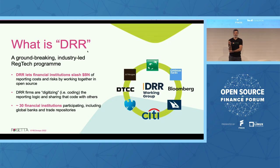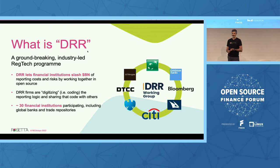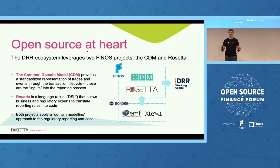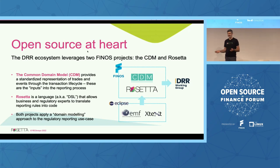In reality, there are more than 30 financial institutions that have been participating in the program, including a number of global banks as well as trade repositories, which are on the receiving end of those reports. All of this has been open source at heart and from the get-go. The DRR ecosystem leverages two Finos projects: the first one is the CDM, and the second one — the clue is in the name — is Rosetta.